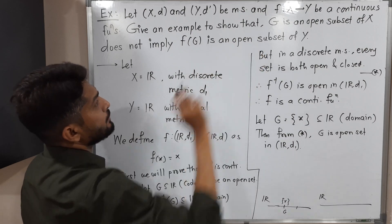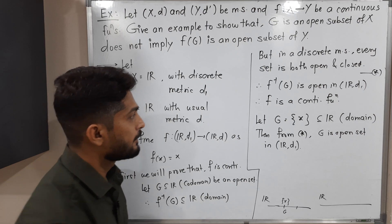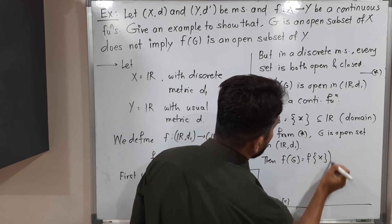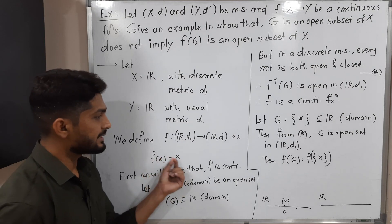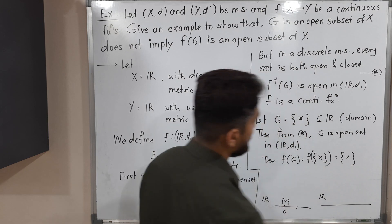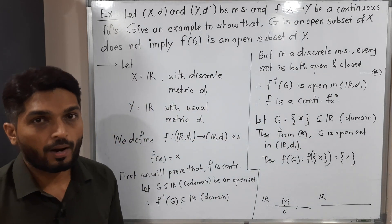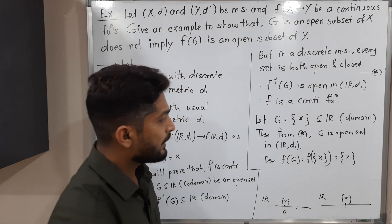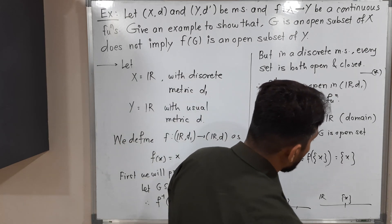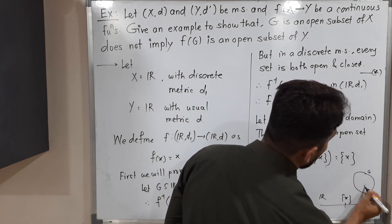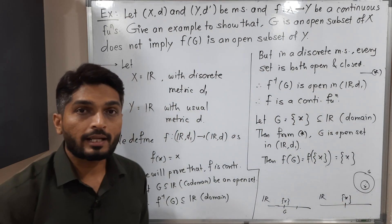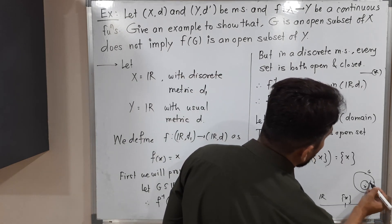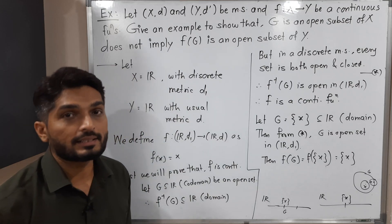Now we have to prove that f(G) is not an open subset of Y. Let us find f(G). That is f({x}). Since f is the identity map, f(x) = x, so f({x}) = {x}. We have to prove that the singleton {x} is not open in ℝ with the usual metric. A set is open if for every point in it you can find a ball around it that lies entirely inside the set.